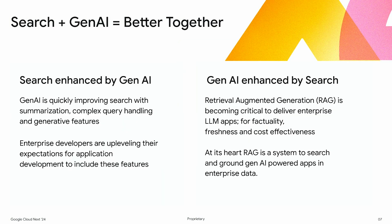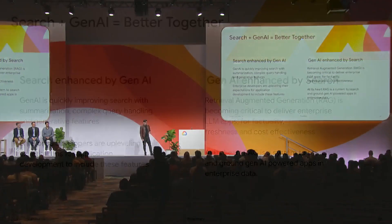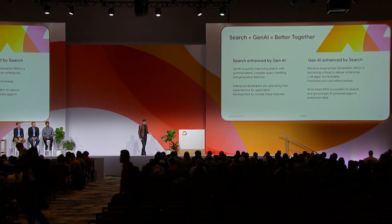What does that mean? We're seeing that both search, in a more classic sense, and gen AI are better together. Search is being enhanced by gen AI because it's able to quickly improve summarization and complex query handling, and enterprise developers are raising their expectations of internal applications because of this. We're also noticing that gen AI is enhanced by search — specifically retrieval augmented generation, or RAG — which is becoming critical in delivering enterprise apps that are factual, fresh, and effective.